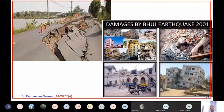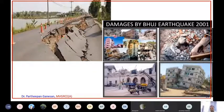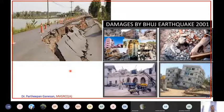The Bhuj earthquake in 2001 completely caused the road to disintegrate. You can see various types of failure during the Bhuj earthquake in 2001 in Gujarat. You can find many figures like this on the internet to see how devastating an earthquake can be.